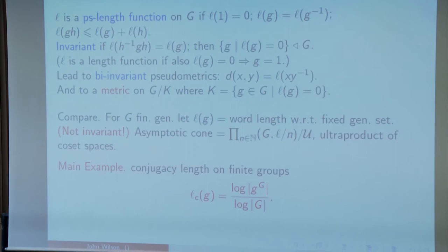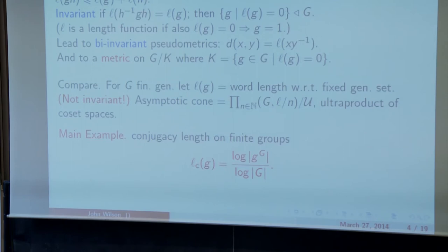We get a real length function if also l of g equals zero implies that g is equal to one. In general we don't get a length function, but we do on the quotient modulo the normal subgroup of all elements of zero length. We've seen this sort of thing before. Asymptotic cones arise in exactly this sort of way. Take a finitely generated group, look at word length with respect to a fixed generating set. Word length is not invariant of course, it's not unchanged by conjugacy.